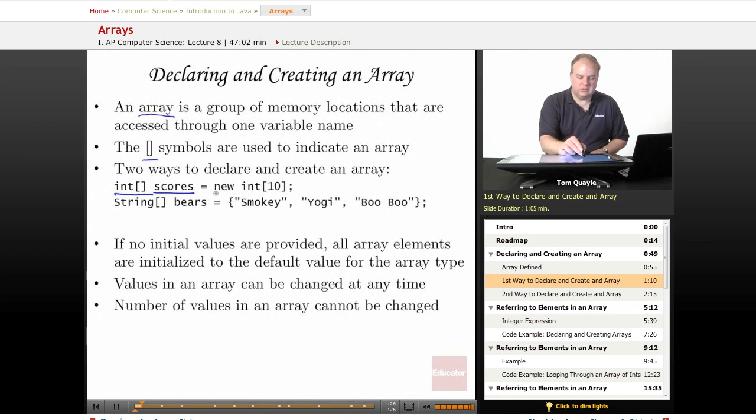And then we actually instantiate one with the new keyword. And we create an array by specifying the data type. Then within the square brackets, we indicate how many values we want in the array. In this case, 10. And we end the statement as we end every statement in Java with a semicolon.